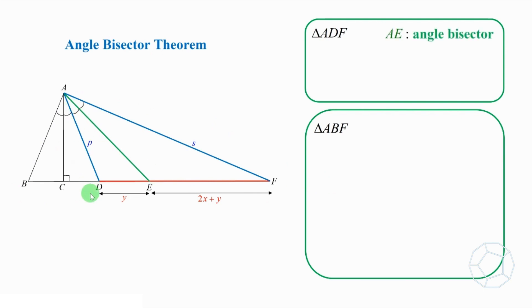In triangle ADF, AE is an angle bisector. Therefore, P over S is equal to Y over 2X plus Y. Let's call this equation 1.